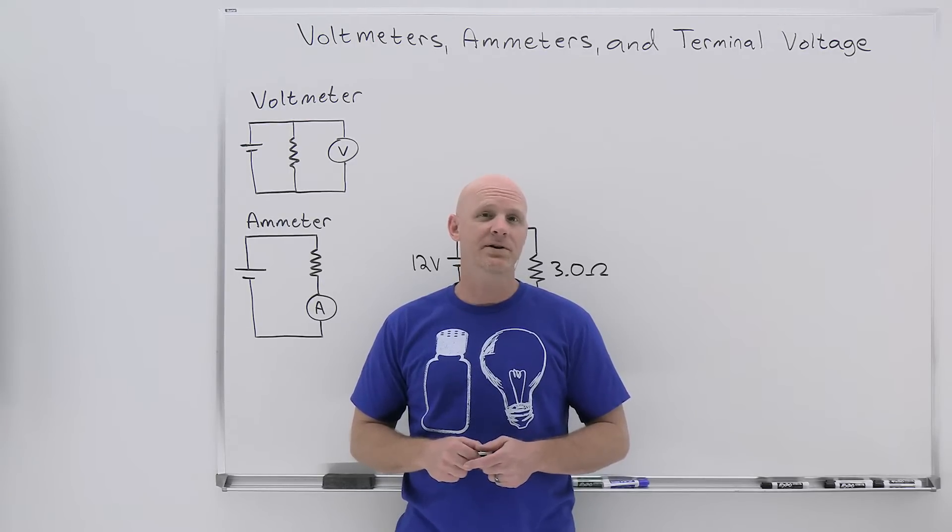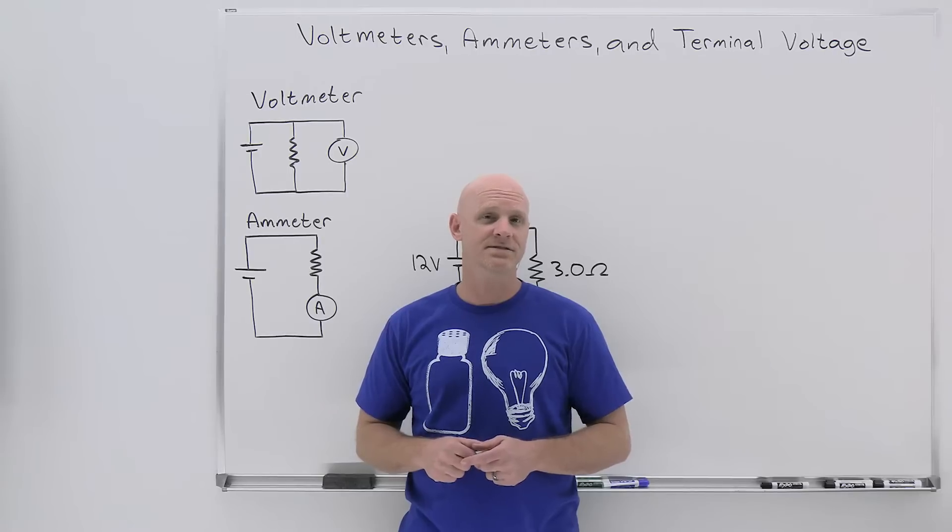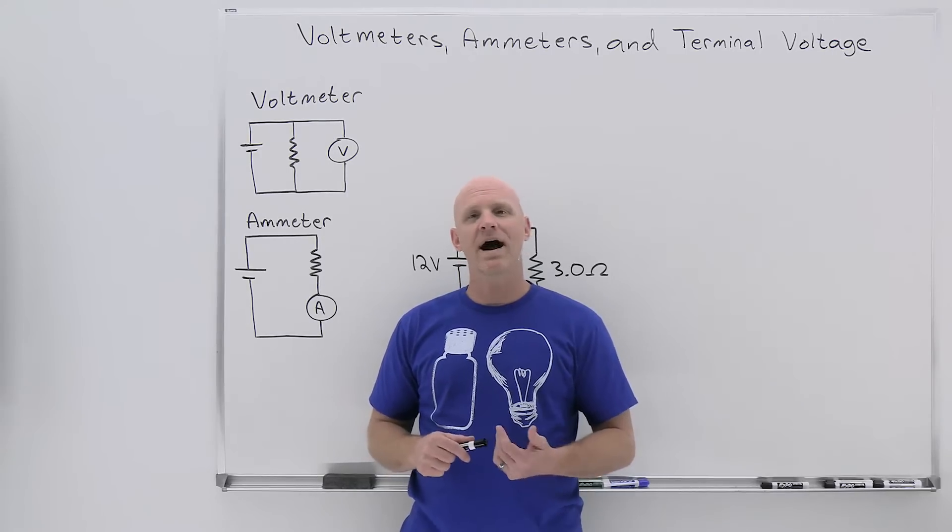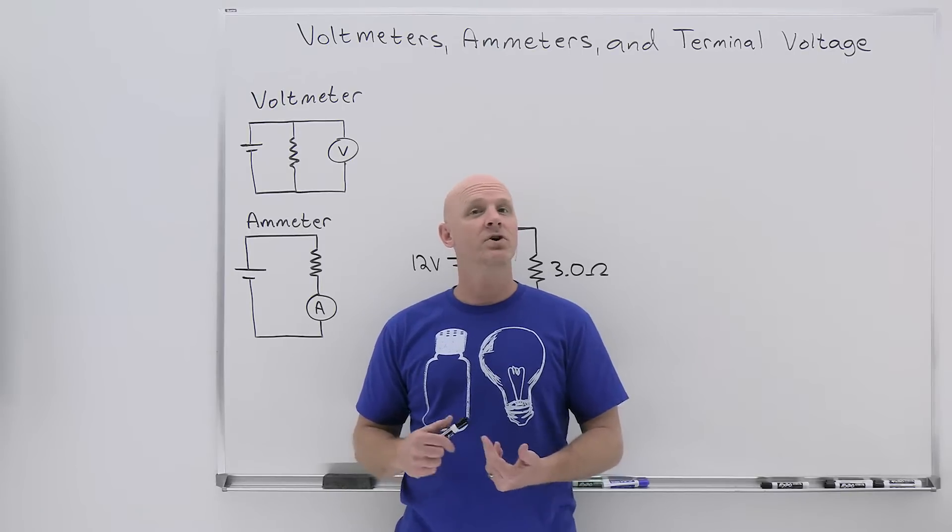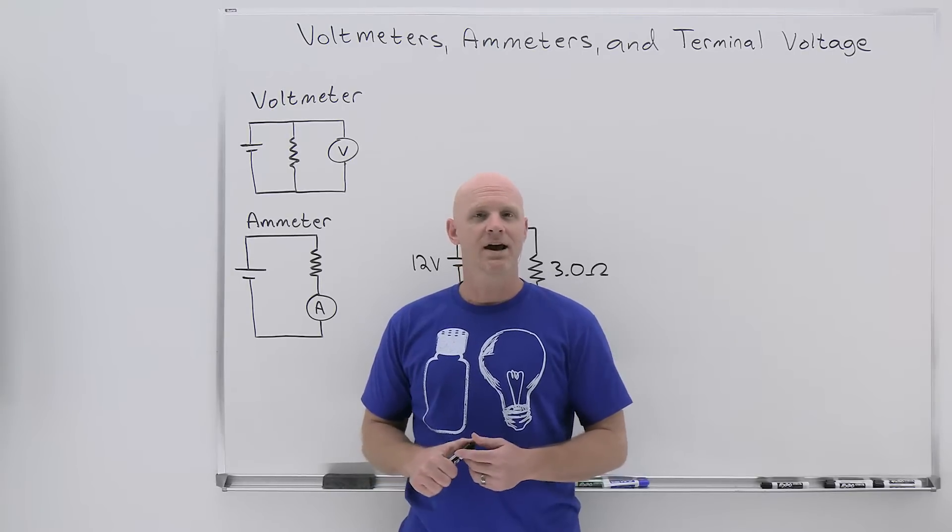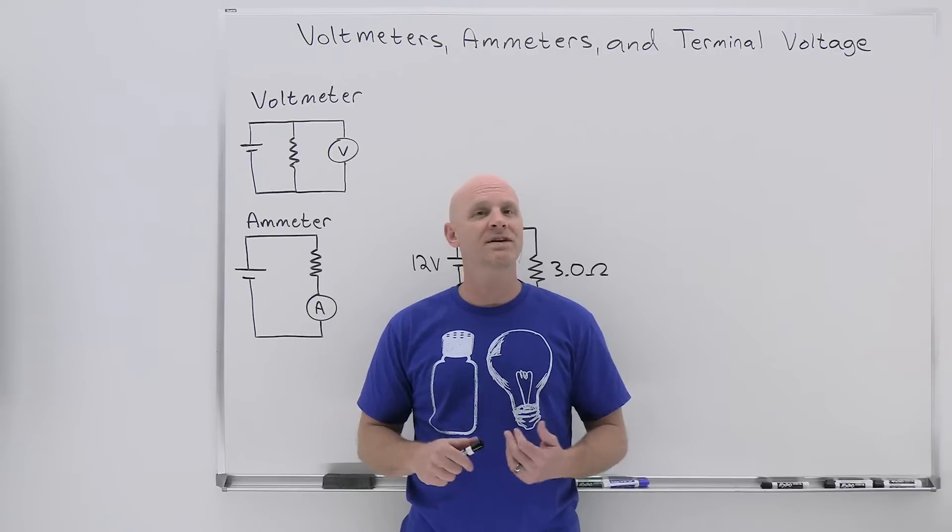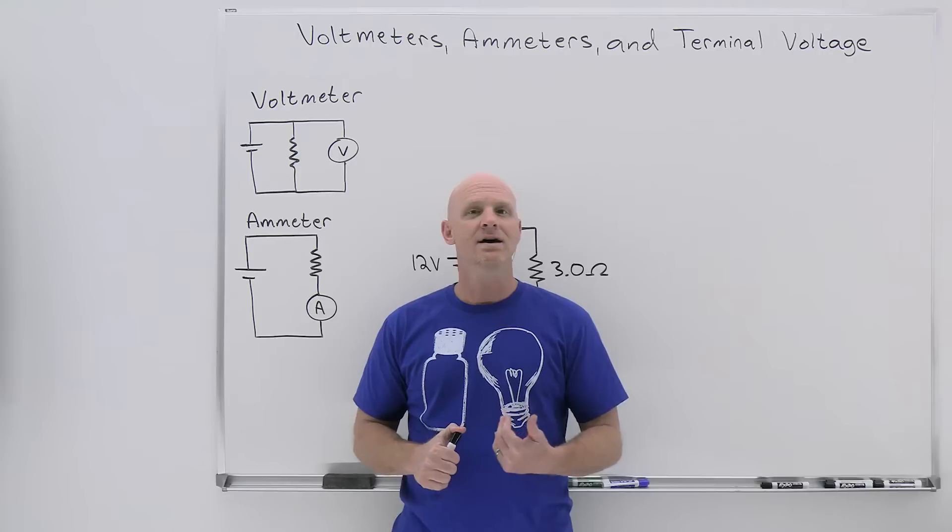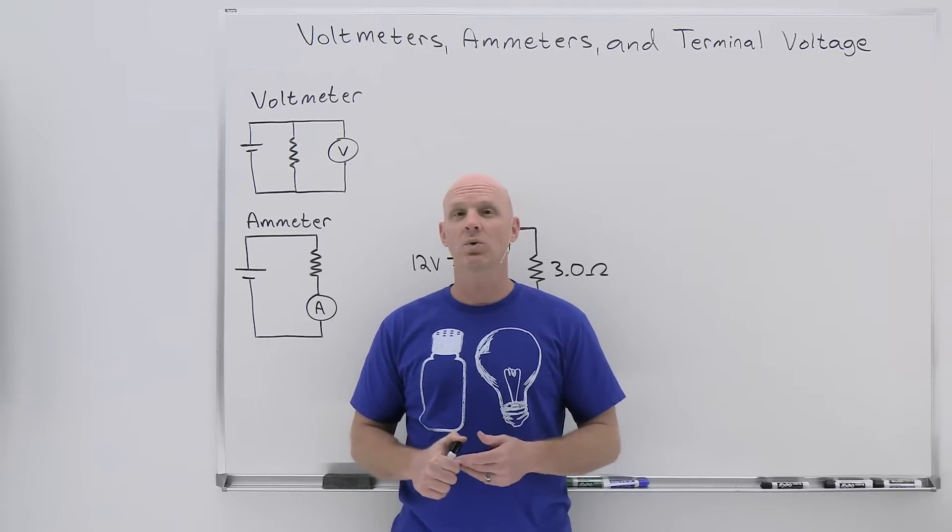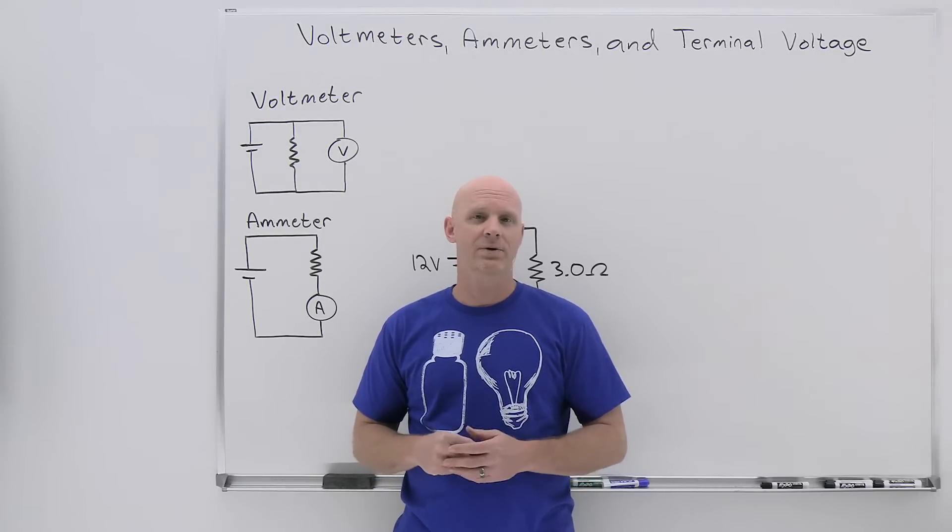This playlist, when complete, will cover a full year of university algebra-based physics. In this lesson, we're going to talk about how we measure the potential difference across a resistor in a circuit and how we measure the current across a resistor in a circuit. Then we'll spend a little bit of time talking about the internal resistance in a battery and how the terminal voltage coming off that battery is in all likelihood going to be a little bit lower than the EMF of the battery itself.